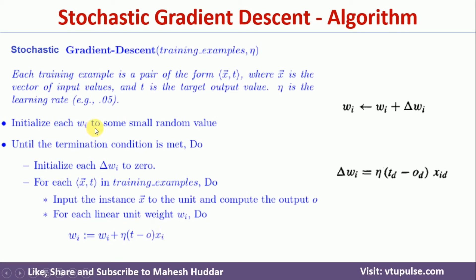In stochastic gradient descent, we first initialize w_i to a very small random number. Then, until the termination condition is satisfied, for each training example we calculate the error term — n into (t minus o) into x_i — and that error term is directly added to the weight. So w_i = w_i + Δw_i, where Δw_i is calculated with respect to the current individual input example, giving the modified weight immediately.